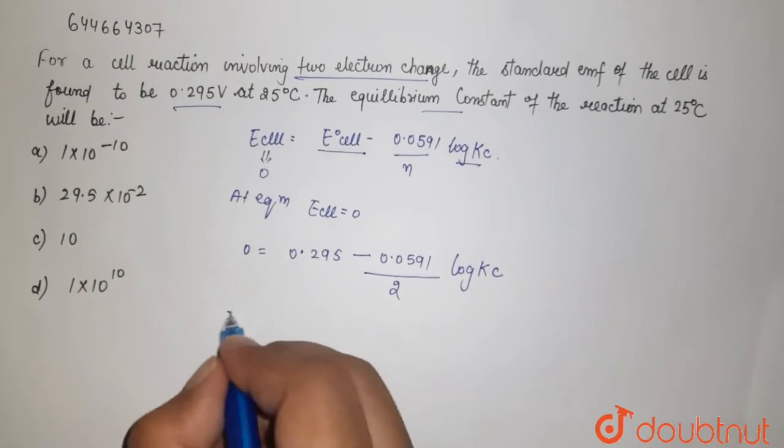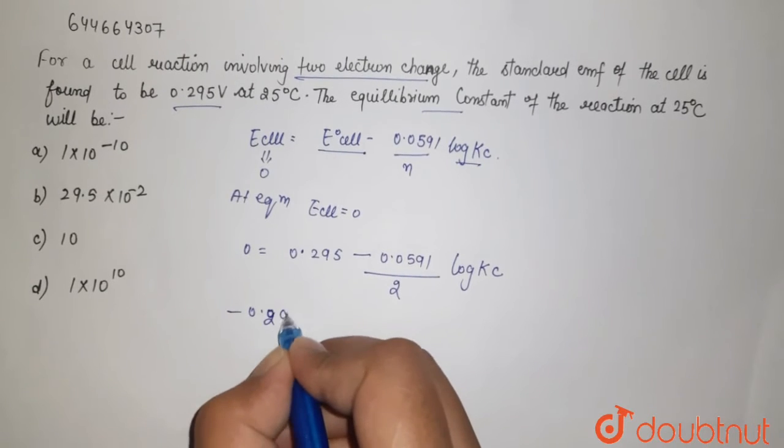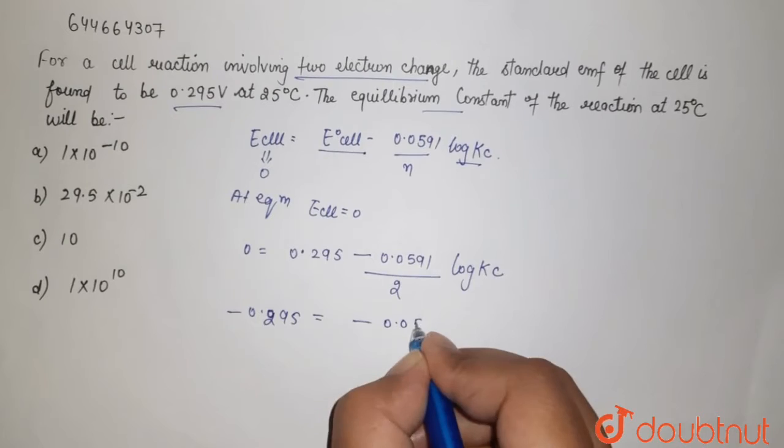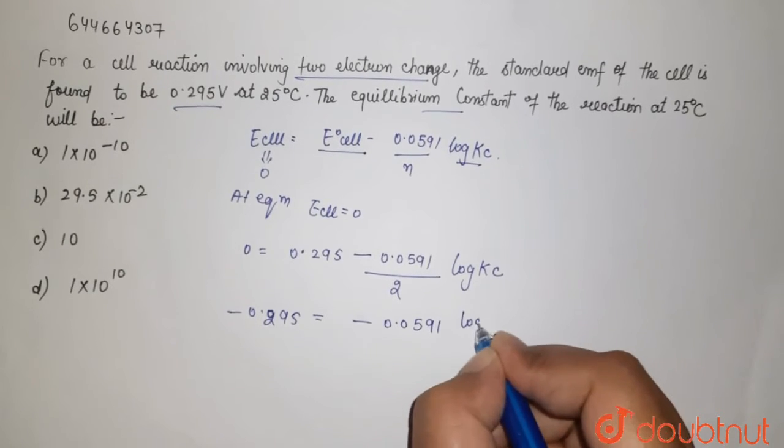Now this will go over here. That is minus 0.295. This is equal to minus 0.0591 log Kc.